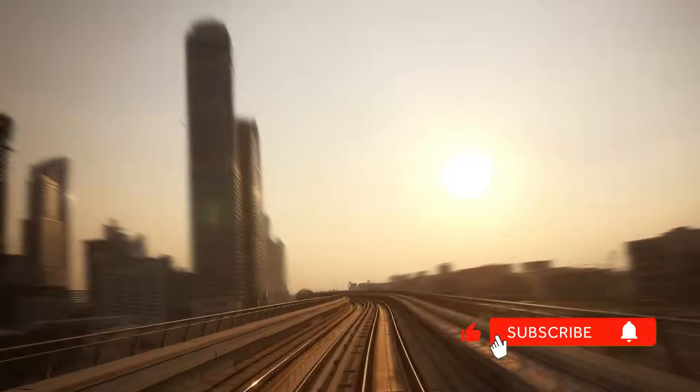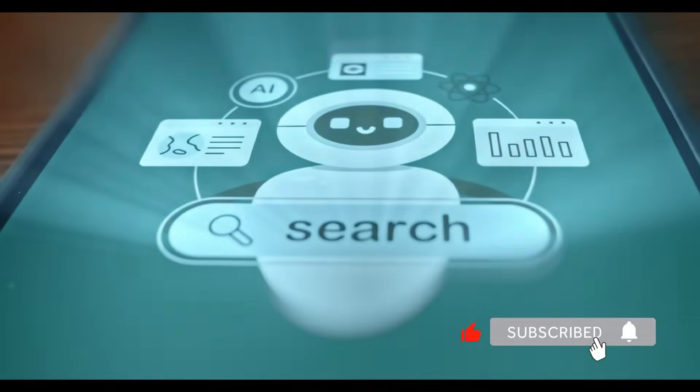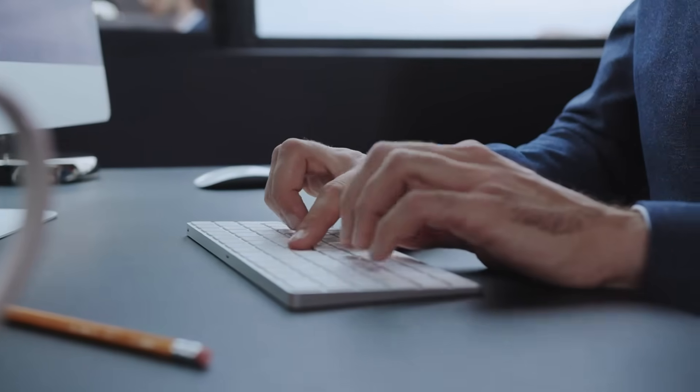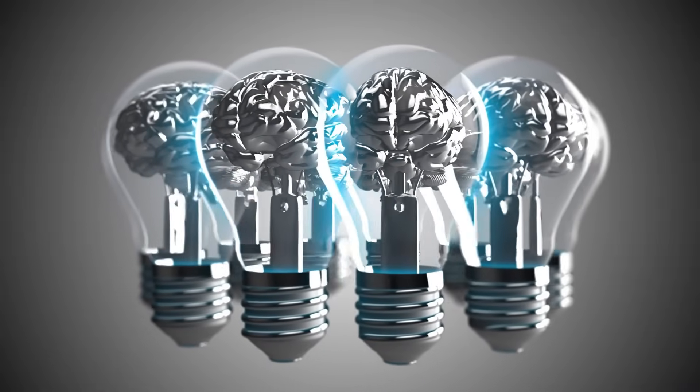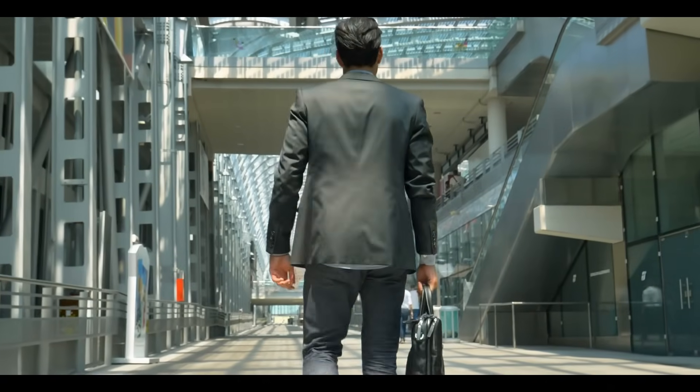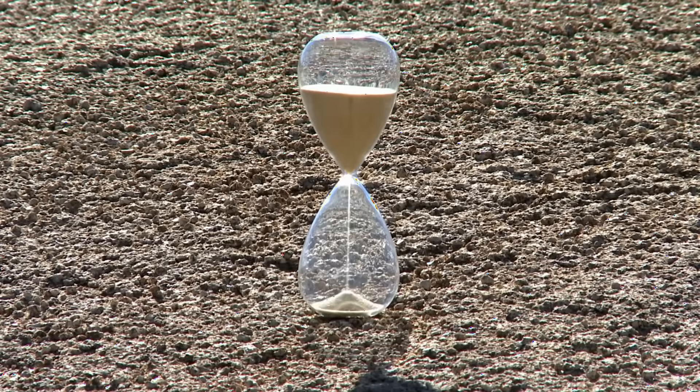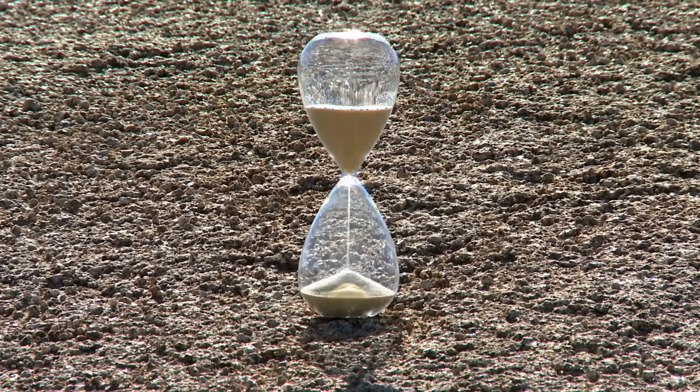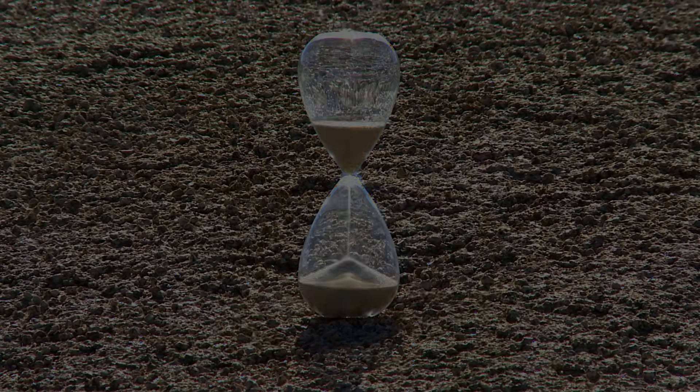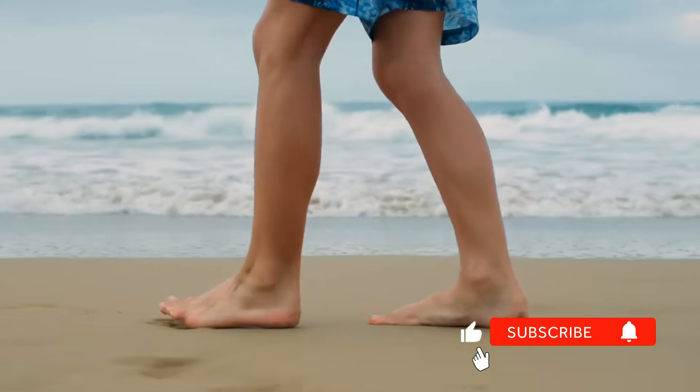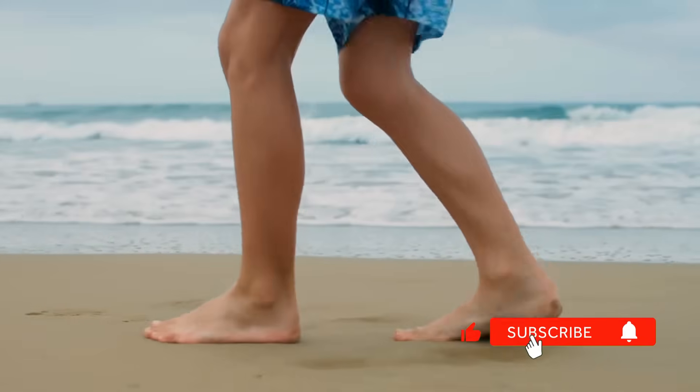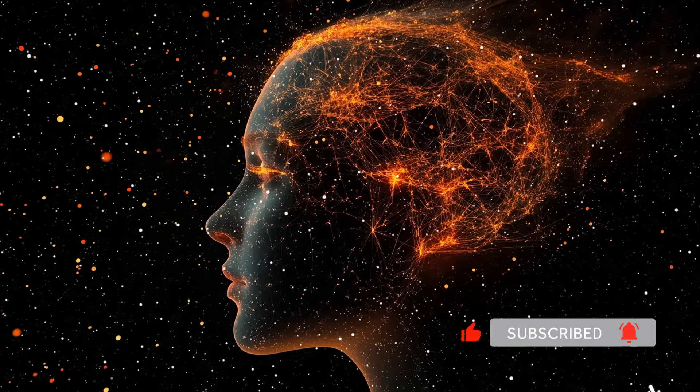We live in a world obsessed with moving faster. Productivity hacks, efficiency tools, speed reading techniques. But the real power isn't in moving faster. It's in moving differently. The smartest people don't just think in new directions. They move in new directions. And sometimes, the breakthrough you need is hiding five minutes behind you. So right now, stand up, turn around, and take five minutes walking backwards. Your brain is already waiting for you to make the move.